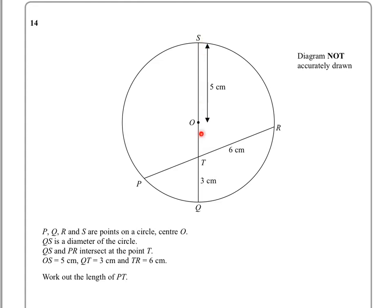But in order to work out this length here, we need to know what this is first. We know that this is the diameter. So if this is 5, that's the radius. That means this must also be the radius. So if that's 5, this must also be 5, which means this bit in here must be 2.